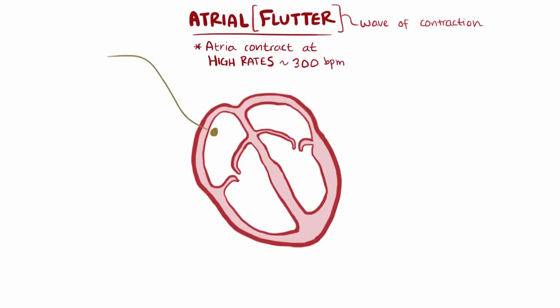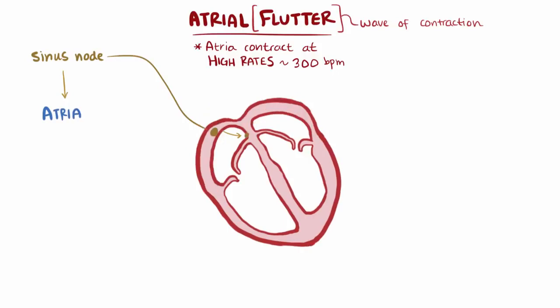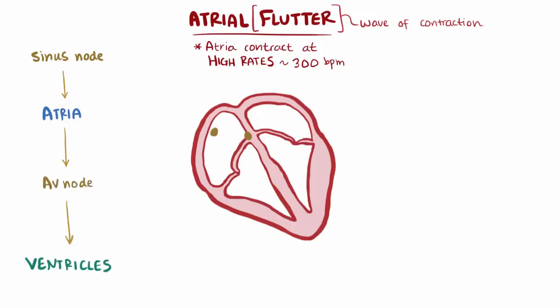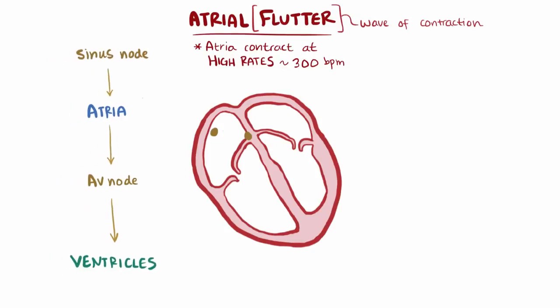Normally, an electrical signal is sent out from the sinus node in the right atrium. It then propagates out through both atria super fast, causing the atria to contract. Usually that signal moves in one direction, from the atria to the ventricles, through the AV node. It then moves down to the ventricles and causes them to contract shortly after.